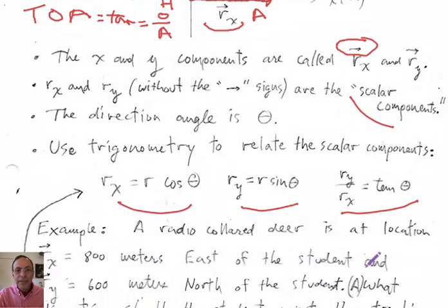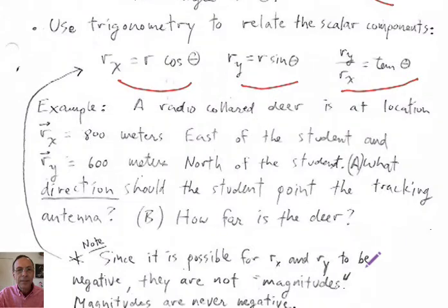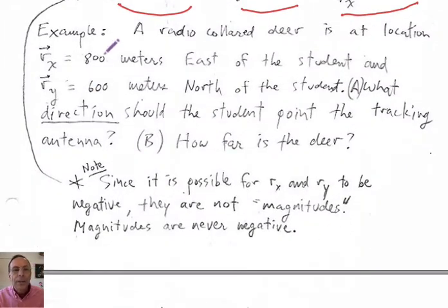Okay. So now let's do an example. So in my example, we have a deer. And it's got one of those tracking collars on it. And the deer is out in the woods. And its location is 800 meters east of the student who's tracking this deer. And it's also 600 meters north, right? So in a xy coordinate system, these are the components of the deer's position vector.